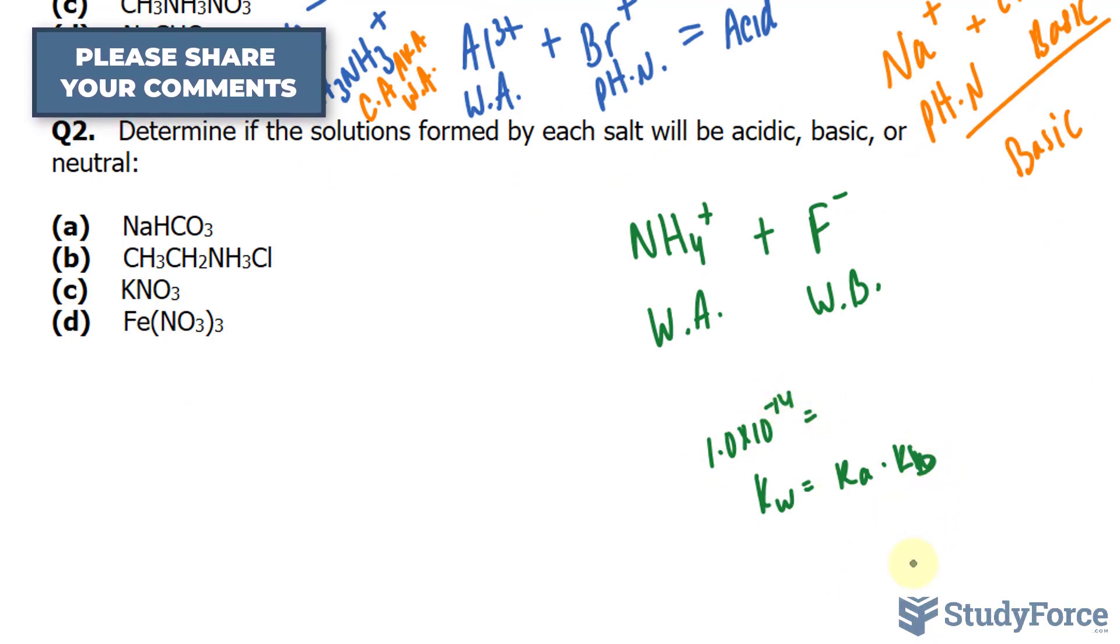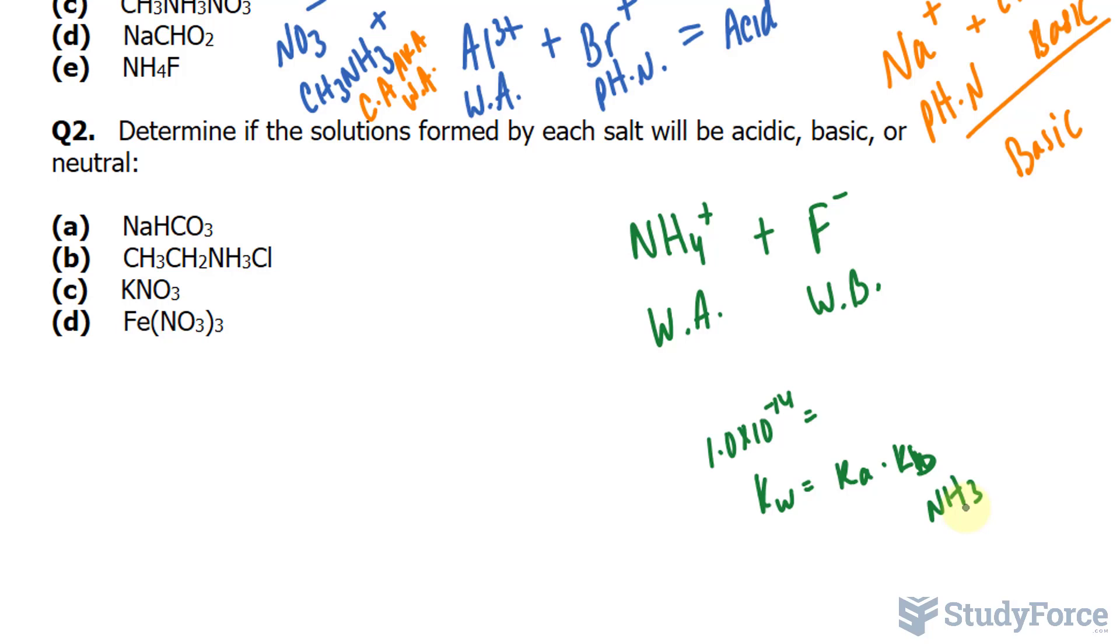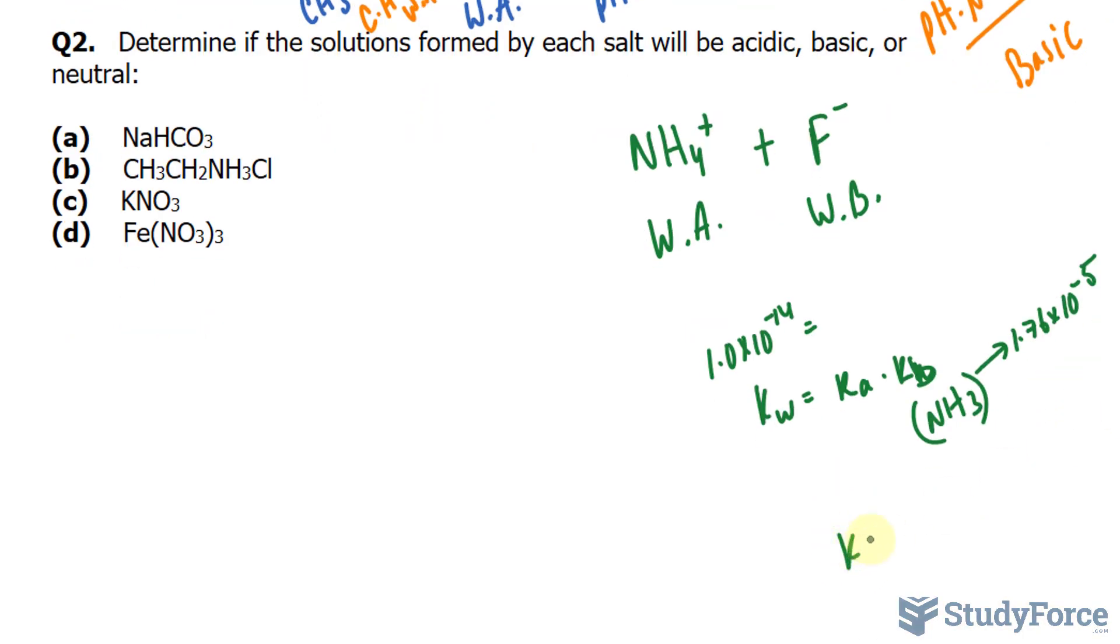Now we find the Kb of NH3 that can be found in a table. If you find it in the table, it should be 1.76 times 10 to the power of negative 5. Let's find out what Ka is as a result.